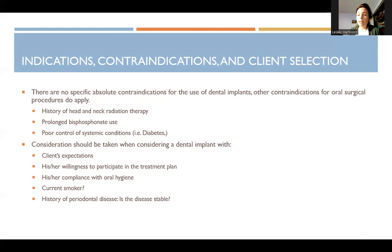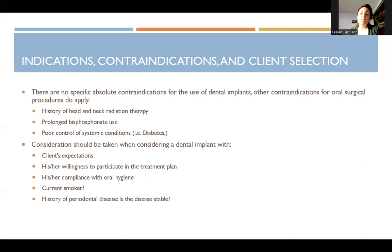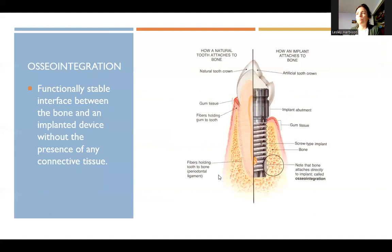If they're trying to place an implant into a very thin mandible where there's been a lot of bone loss and resorption from not having teeth, that also plays a big role. Surgeons also consider the client's expectations, their willingness to participate in the treatment plan, their current oral hygiene, whether they smoke, and the history of periodontal disease — whether it's been stable — because an unstable perio patient would not make a good candidate.